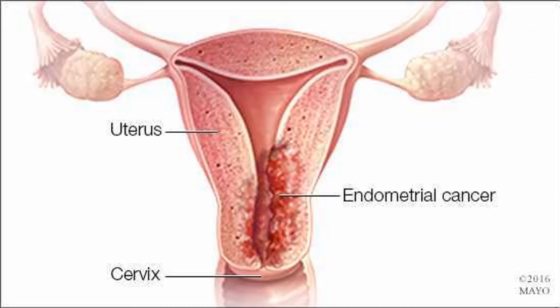Uterine carcinosarcoma starts in the endometrium and has features of both endometrial carcinoma and sarcoma. Sarcoma is cancer that starts in muscle cells of the uterus. In the past, carcinosarcoma was considered a different type of uterine cancer called uterine sarcoma, but doctors now believe that CS is an endometrial carcinoma that's so abnormal it no longer looks much like the cells it came from — it's poorly differentiated. Uterine CS is a type 2 endometrial carcinoma. CS tumors are also known as malignant mixed mesodermal tumors or malignant mixed Müllerian tumors. They make up about 3% of uterine cancers.